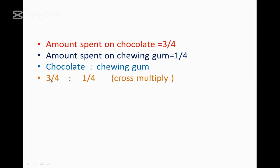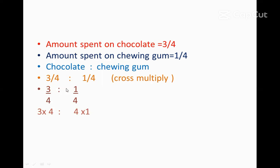This is three by four — three is in the numerator and four is in the denominator, and here one is in the numerator and four is in the denominator. We can also write it in fractional form, which has a numerator as well as a denominator. Now cross multiplication is done: three multiplied by four, and then four multiplied by one.